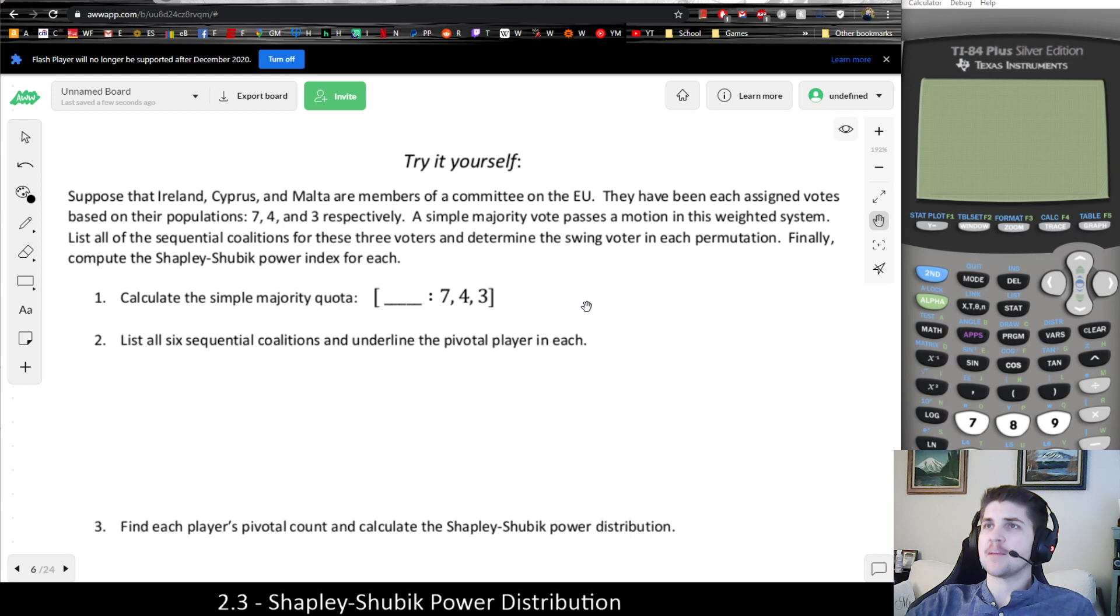It says suppose that Ireland, Cyprus, and Malta are members of a committee on the EU. They have been each assigned votes based on their population: 7, 4, and 3, respectively. A simple majority vote passes a motion in this weighted system. List all of the sequential coalitions for these three voters and determine the swing voter. Finally, compute the Shapley-Shubik power index for each.